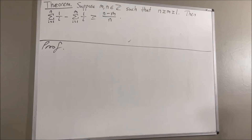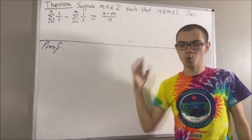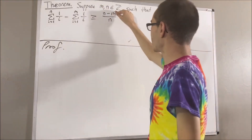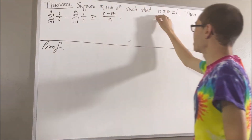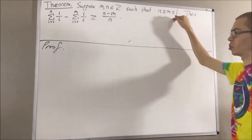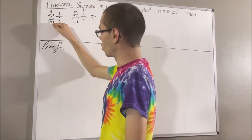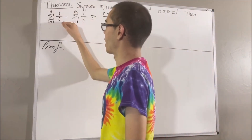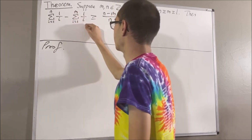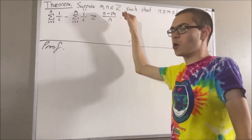Hello! In this video, we are going to prove the following theorem. Suppose m and n are integers such that n is greater than or equal to m is greater than or equal to 1. Then, the sum from i equals 1 to n of 1 over i minus the sum from i equals 1 to m of 1 over i is greater than or equal to n minus m over n.